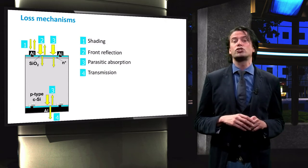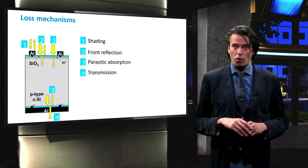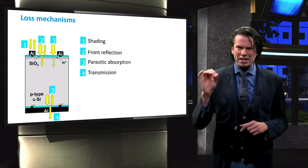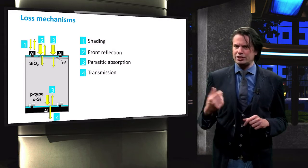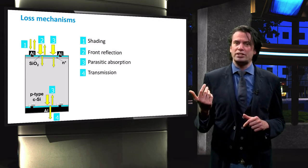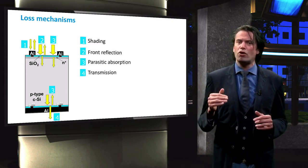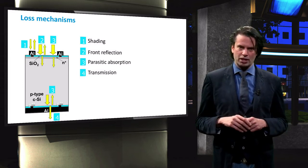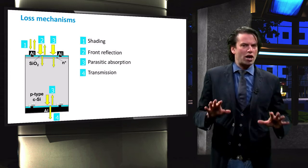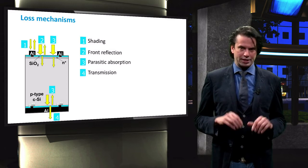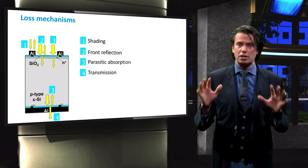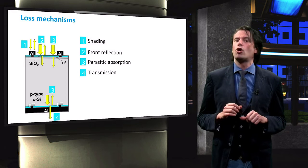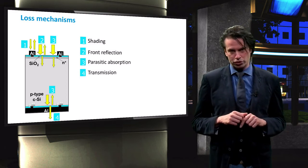The final loss mechanism concerns the transmission of photons from the solar cell without being absorbed. This generally involves photons with energy equal to or slightly above the bandgap energy. These photons have a lower absorption probability and can therefore travel through the cell without being absorbed, due to the limited optical thickness of the solar cell.